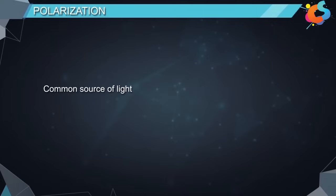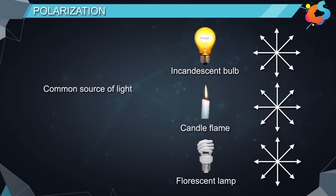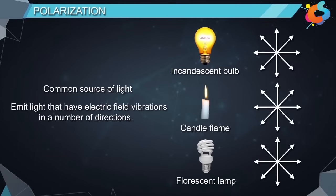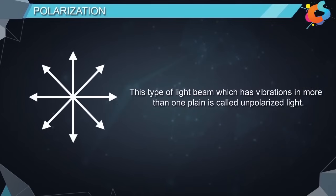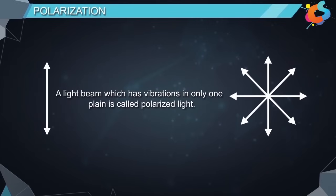Due to this, a common source of light — like an incandescent bulb, candle flame, fluorescent lamp, etc. — emits light that has electric field vibrations in a number of directions. This type of light beam which has vibrations in more than one plane is called unpolarized light. Similarly, a light beam which has vibrations in only one plane is called polarized light.